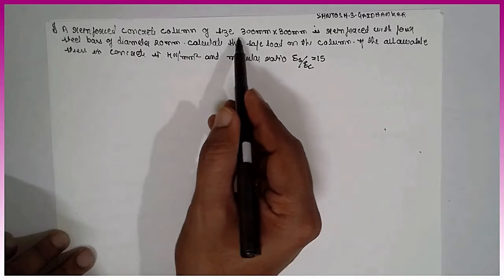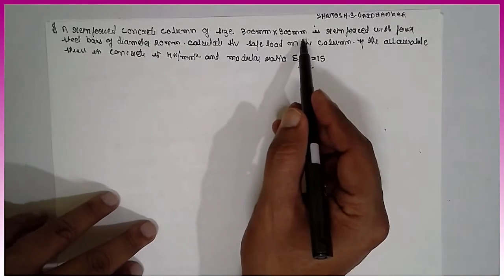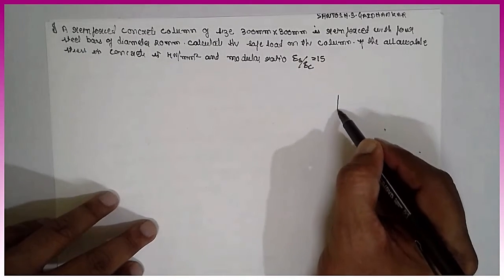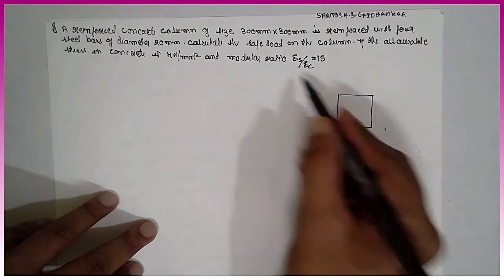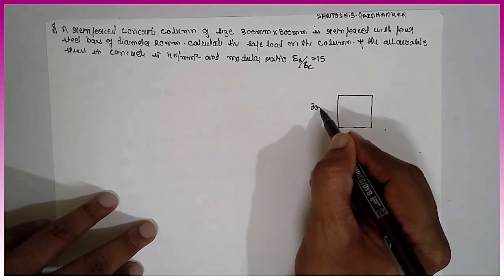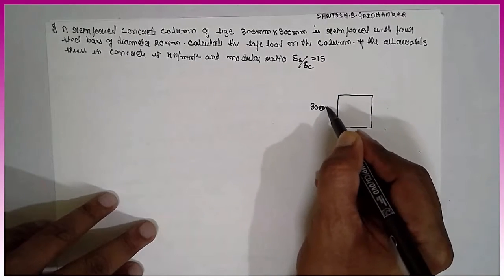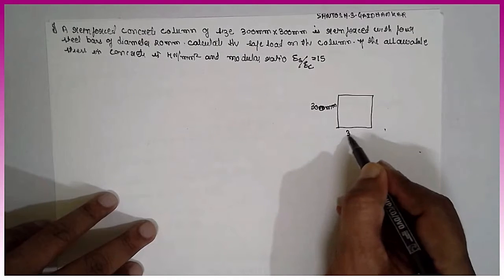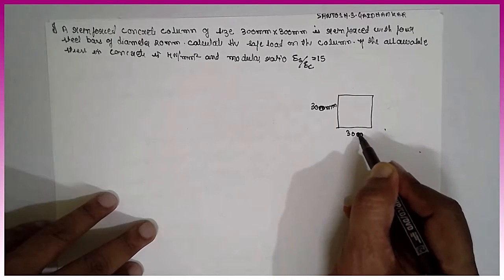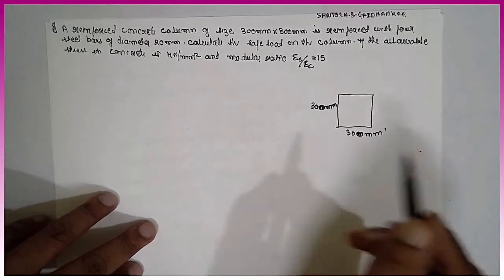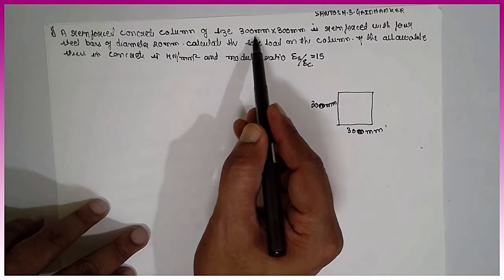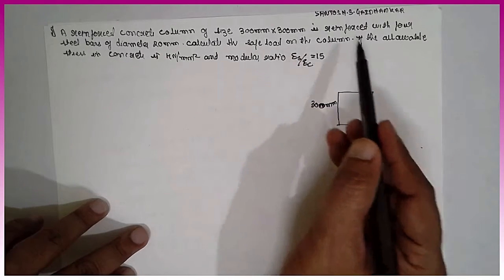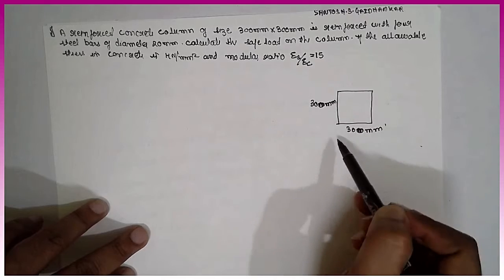A reinforced concrete column of size 300 mm into 300 mm. The size of concrete is given 300 mm into 300 mm.